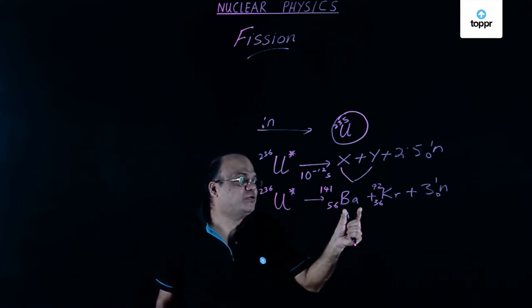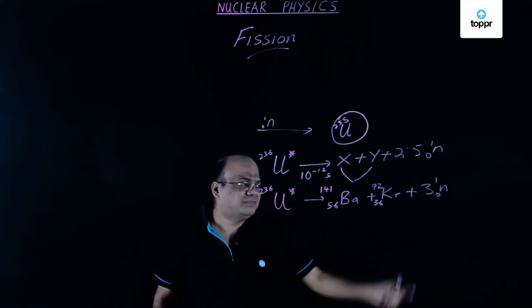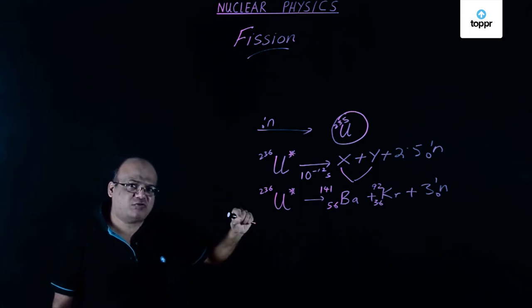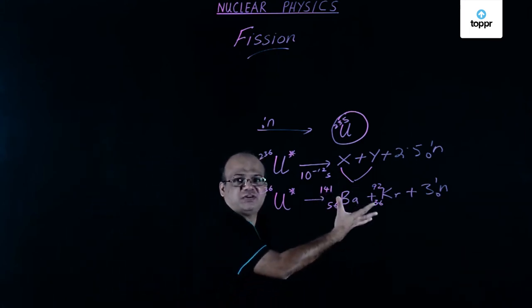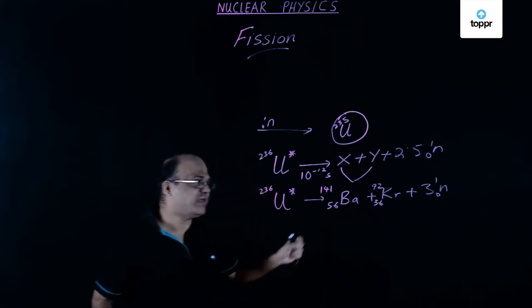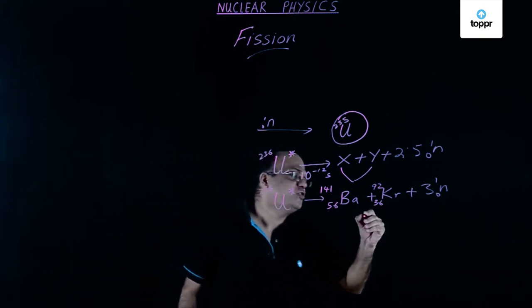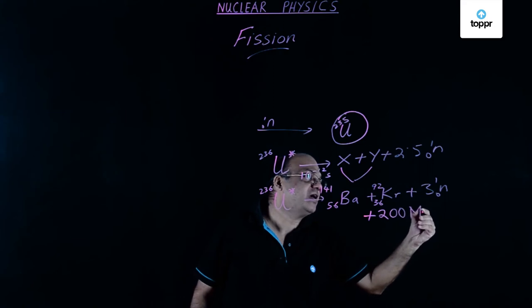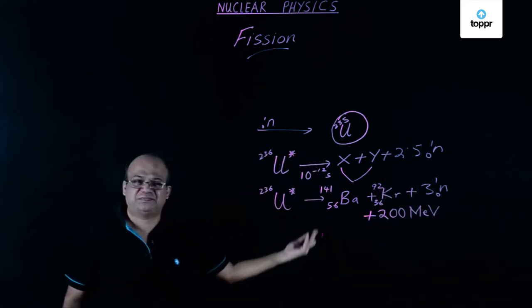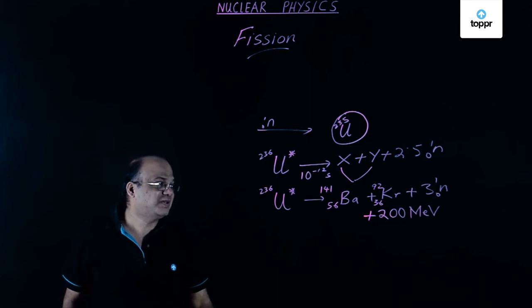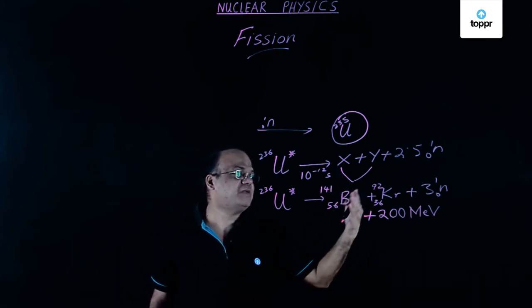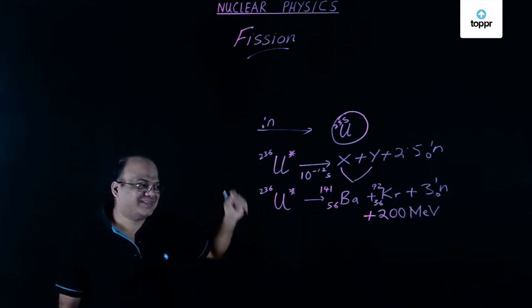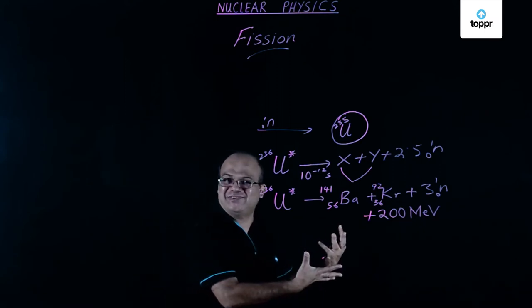We get an average of 2.5 neutrons in this nuclear fission reaction, and we get an energy of 200 million electron volts — 200 mega electron volts — a huge amount of energy per reaction. That energy comes because the combined mass of the daughter nuclei is less than the mass of the parent nucleus, and that mass is converted to energy.